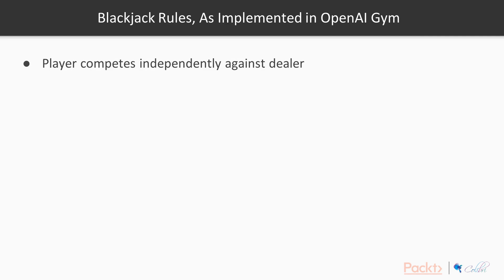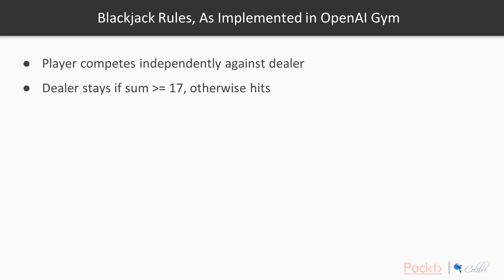Let's take a look at blackjack rules as they're implemented in the OpenAI Gym environment. Blackjack is a very common game. In the particular setting that the OpenAI Gym has implemented, the player competes independently against the dealer. The dealer has a very fixed strategy: he stays if his card sum total is larger or equal to 17, otherwise he hits — he doesn't get a new card if it's 17 or above, but gets a new card otherwise.